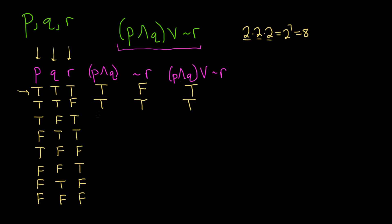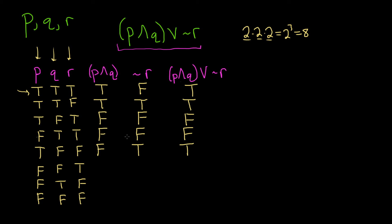For row 3 (T, F, T): P and Q is false because Q is false. The negation of R is false. Both are false, so the or statement is false. For row 4 (F, T, T): P and Q is false because P is false — both must be true for the and to be true. The negation of R is false. The or statement is false. For row 5 (T, F, F): P and Q is false because Q is false. The negation of R is true. The or statement is true because the negation of R is true.